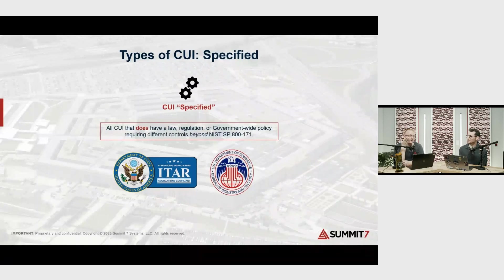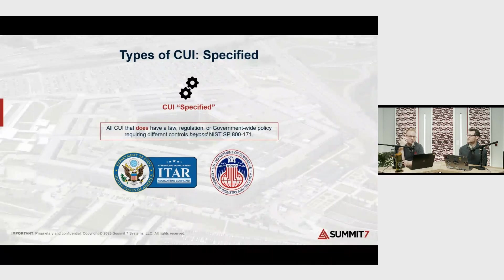Another great example of CUI Specified is export control. We have ITAR and certain levels of EAR information that must be protected to a level of U.S. persons contained inside the United States — all of that good stuff — unless appropriate controls are applied with carve-outs, which we'll get into a little bit later.